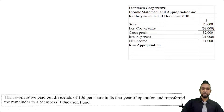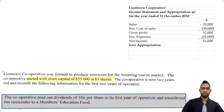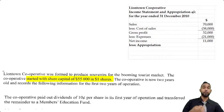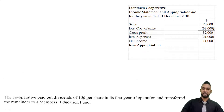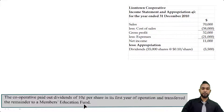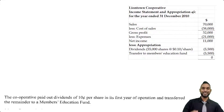The only appropriations we are aware of are the dividends at 10 cents per share. They started with a share capital of $55,000 in one dollar shares, meaning 55,000 shares. At 10 cents per share, you take 55,000 and multiply by 0.1, because 10 cents is 0.1 of a dollar, giving you the dividend amount. Then there is the remainder transferred to the members education fund. For example, if you had $11,000 in net income before appropriation and paid out $5,500 in dividends, the remainder of $5,500 is transferred to the members education fund, leaving no retained surplus.